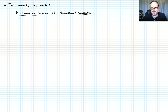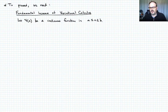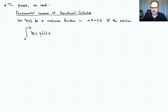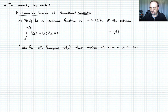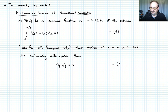Here is the fundamental lemma of variational calculus. Let psi of x be a continuous function on [a, b]. If the relation — the integral from a to b of psi of x times eta of x dx equals zero, equation four — holds for all functions eta of x that vanish at x equals a and x equals b, and eta of x is continuously differentiable, then psi of x must itself equal zero. That is equation five.